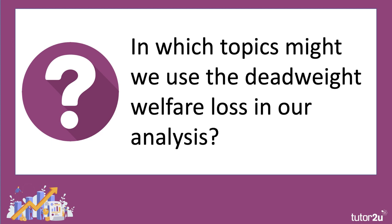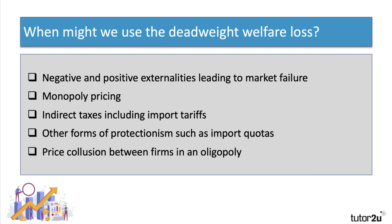How can we apply the concept of the deadweight welfare loss? In which topics might we bring this into an analysis, particularly in an exam question? Well, here are five examples — there are others, and we'll produce a short video on each as part of this series on welfare losses. We'll look at the impact of negative and positive externalities leading to market failure. The deadweight loss can be an absolutely key part of a diagram to get you to the top echelons of a mark scheme. We'll revise monopoly pricing and the extent to which that leads to a deadweight loss of welfare. And likewise, an intervention in markets in the form of import tariffs and import quotas — in other words, is there a link between protectionism and welfare losses? We'll also do a quick video looking at the impact of price collusion between oligopolistic firms and the impact this has on consumer welfare.